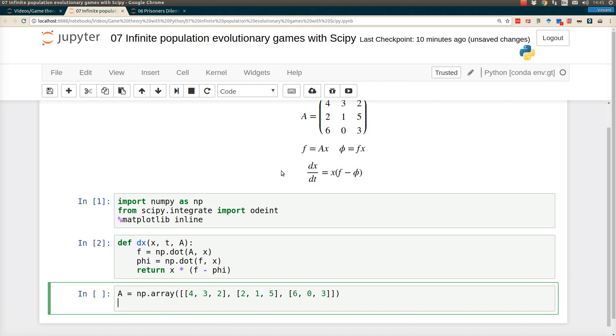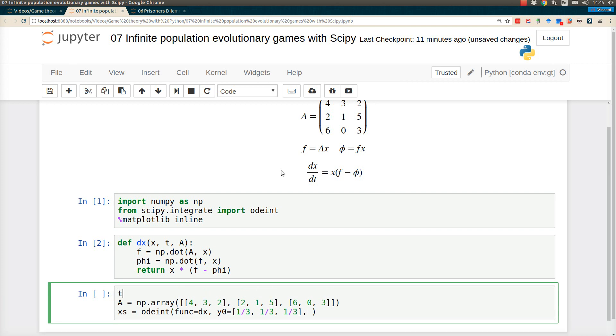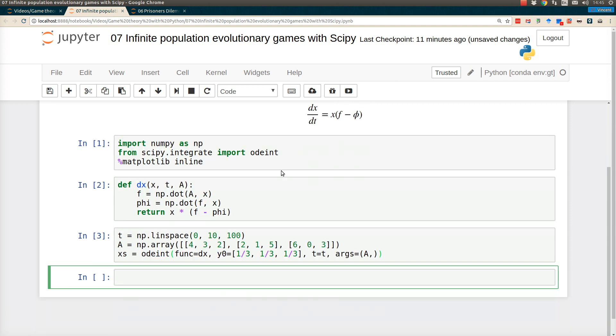What I'm going to do is create all the x's over time. That's done using odeint. The function I use is dx - that's my derivative. I need y0, where the population starts, so I'll go with one-third, one-third, one-third. I need to decide where I'm integrating this over - these are my time periods. I use NumPy's linspace to create a bunch of t's from 0 to 10, and I want 100 of them. Then finally, I pass arguments to the dx function, which is this matrix A.